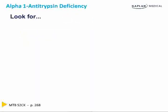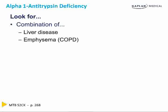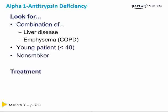Alpha-1 antitrypsin deficiency is a defect in the production of alpha-1 antitrypsin. Look for a combination of liver disease and emphysema in a patient who is young and a non-smoker. Treatment is to replace the enzyme exogenously.